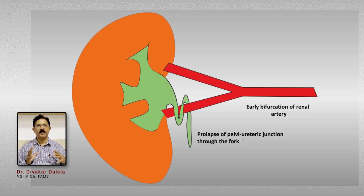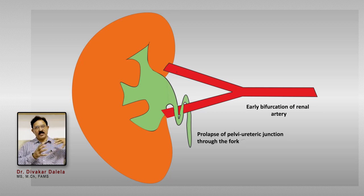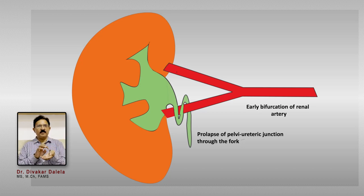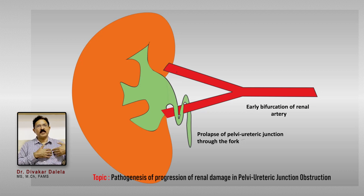Urine accumulates in the renal pelvis, the patient will experience pain, and as more and more urine fills up in the pelvicalyceal system, it becomes from an ovoid to a globular, ball-like structure. The pelvic wall stretches, the uretero-pelvic junction which has prolapsed to the fork tends to get backwards again — it kind of de-prolapses back to normal. Because of the pulling effect of the stretching pelvic wall, the kinking is removed and the obstruction is suddenly removed.